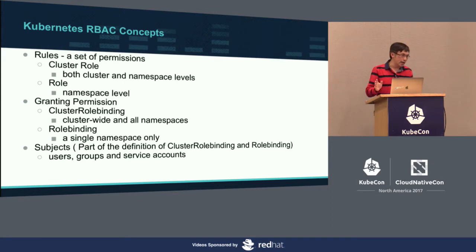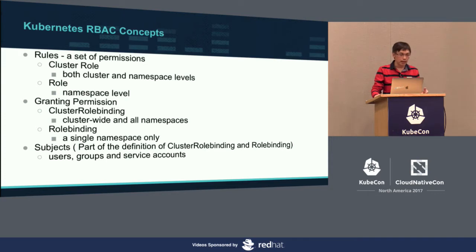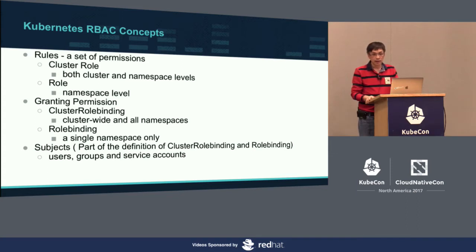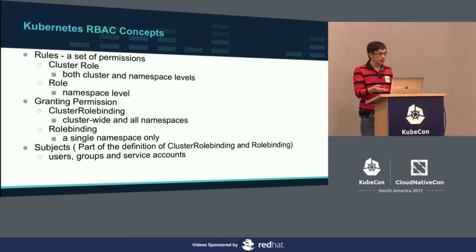For RBAC, the way it's set up is based on rules. There are two types of role objects: ClusterRole and Role. To grant permissions in Kubernetes RBAC, you use either ClusterRoleBinding or RoleBinding. RoleBinding is for a particular namespace, while ClusterRoleBinding is cluster-wide across all namespaces. When you grant a permission, you grant it to a subject—a subject can be a user, a group, or a service account.